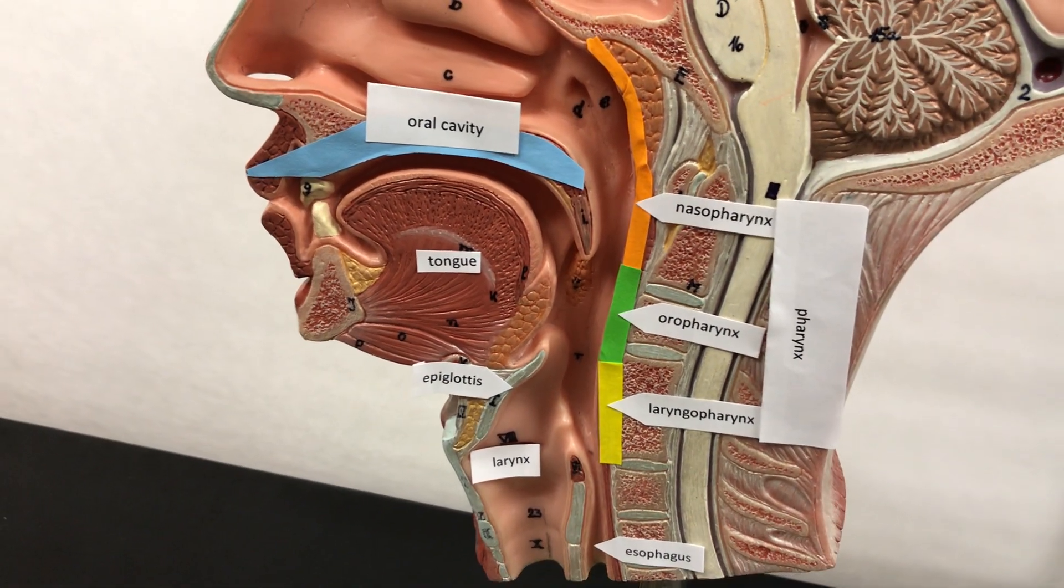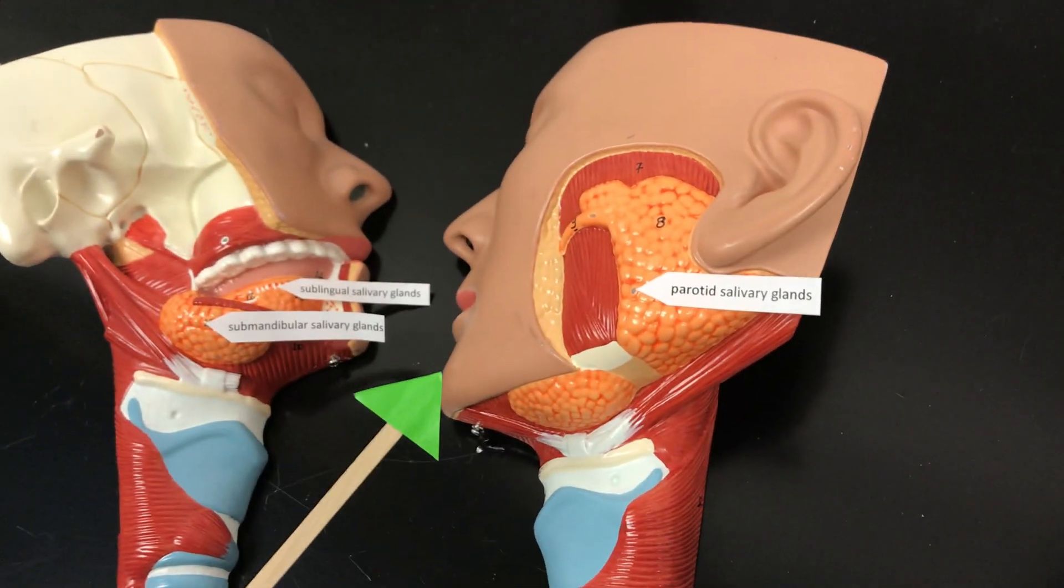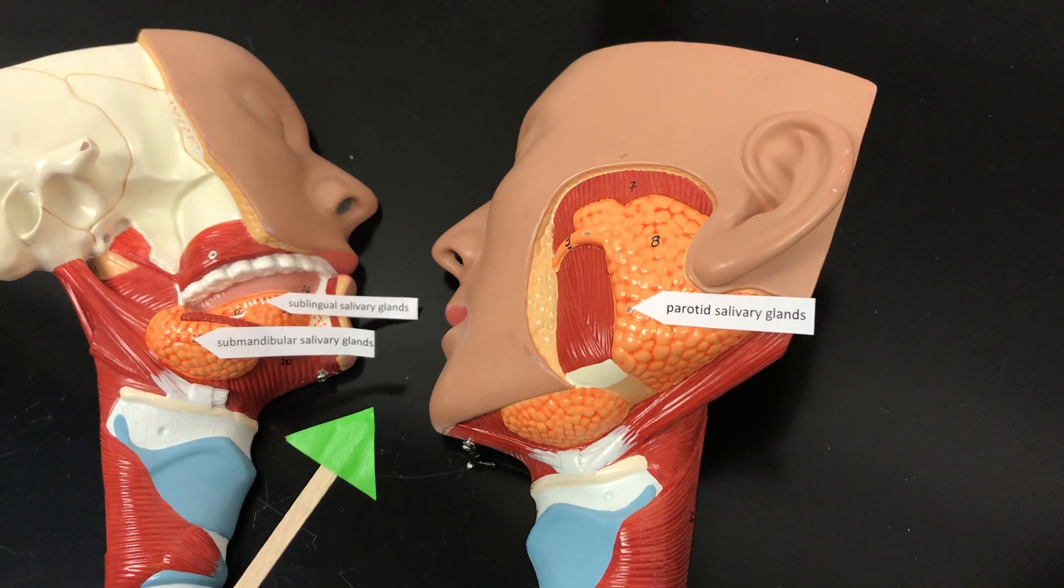And then there are also three pairs of salivary glands that secrete saliva. They aid in digestion and moisten the food.